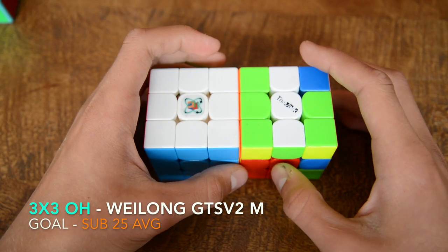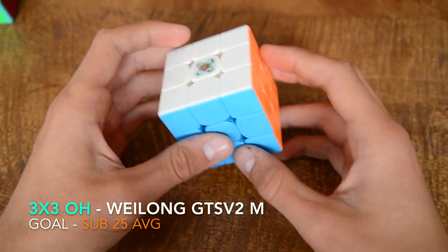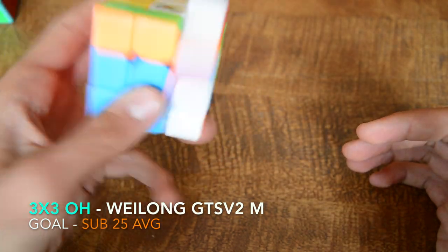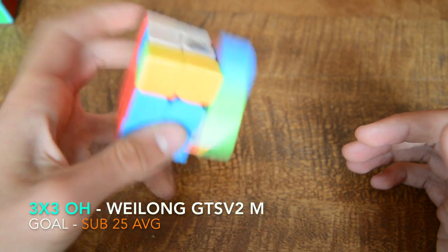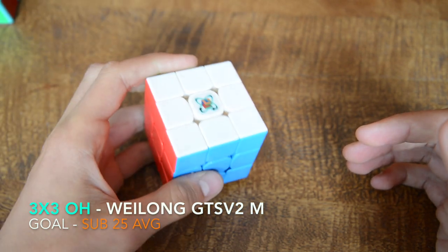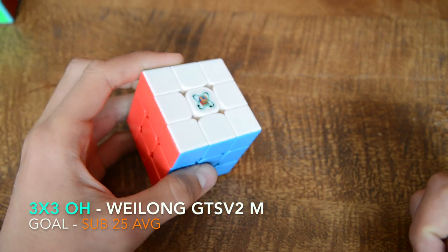Okay so next up we have 3x3 one handed. I'll be using the Weilong GTS 2 magnetic and my goal is to get a sub 25 average.